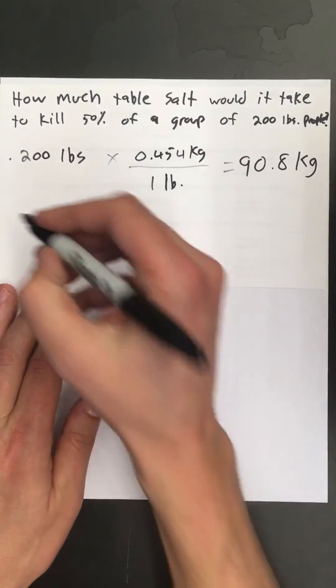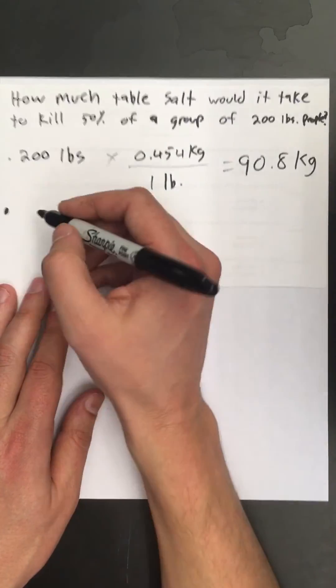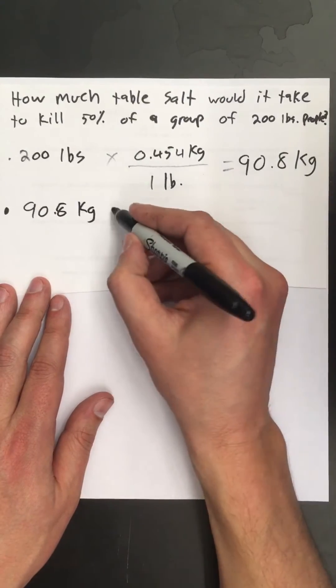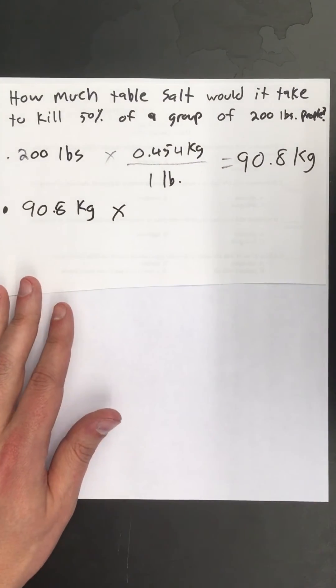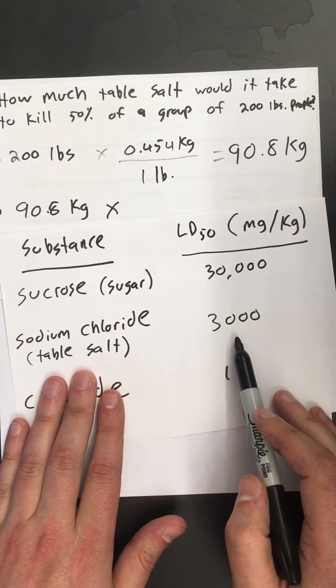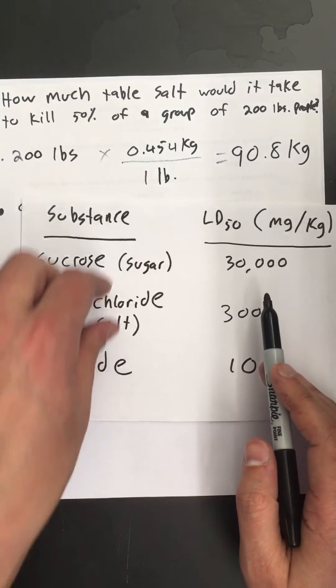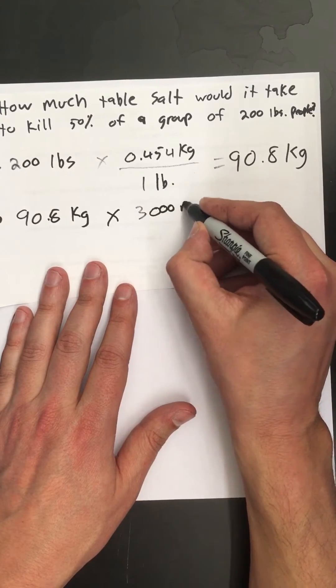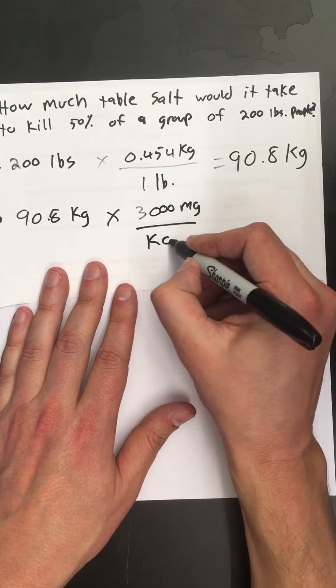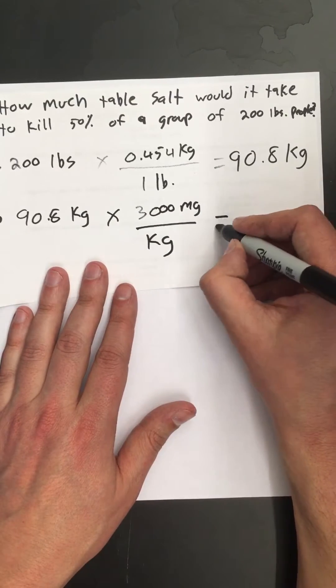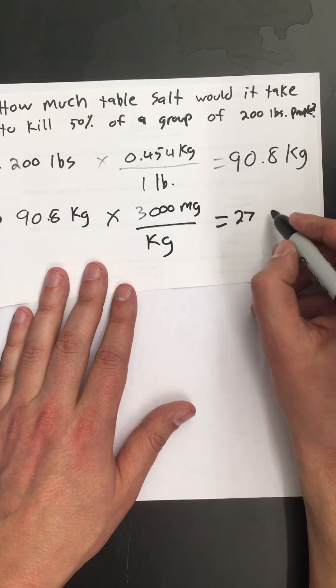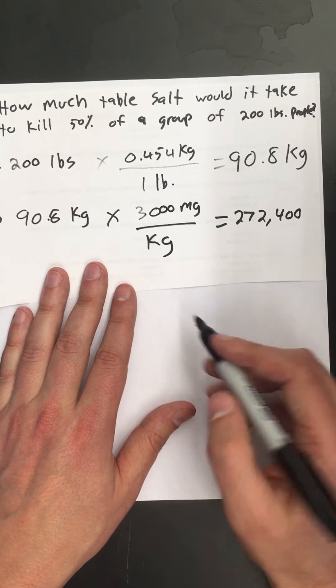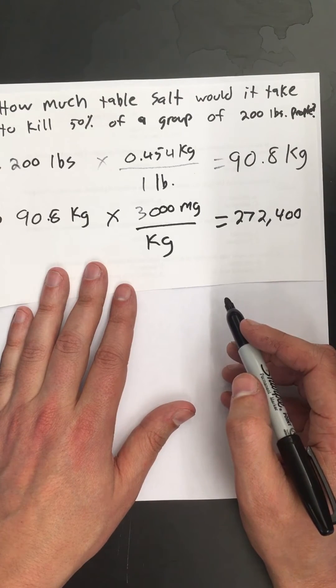Okay so there's step one. Now step two. I'm going to take my mass which I just figured out is 90.8 kilograms and now I'm going to multiply that by the LD50 for sodium chloride. If we remember, sodium chloride has an LD50 of 3,000 milligrams per kilogram. So let's take my mass times 3,000 milligrams per kilogram. And that's going to give us the amount of table salt to kill 50% of a group of people that weigh about 200 pounds.